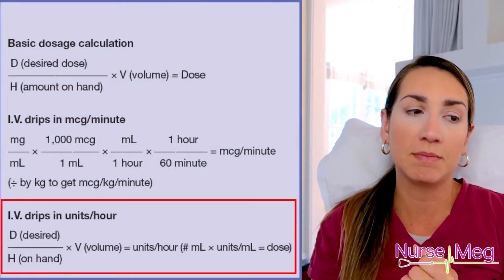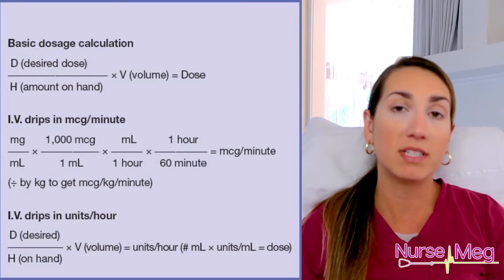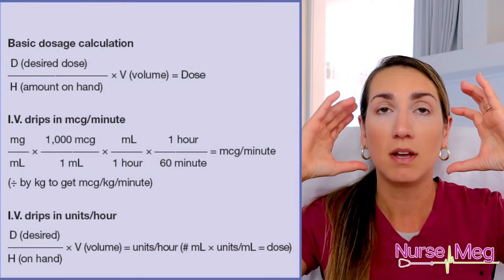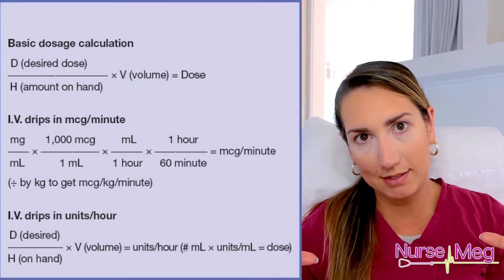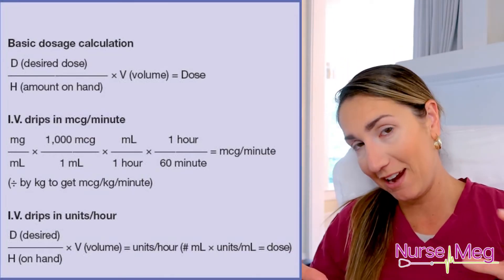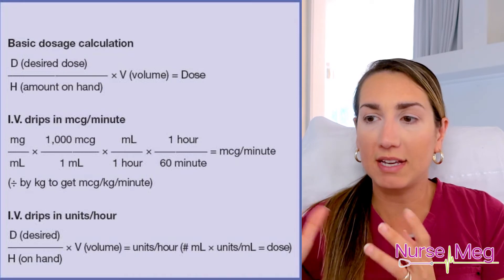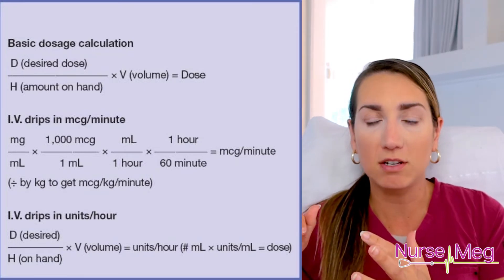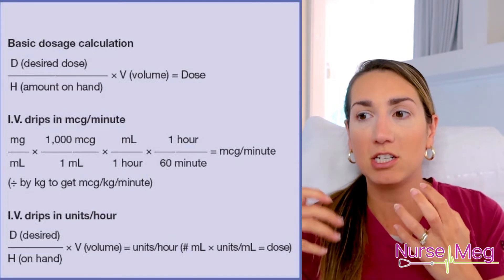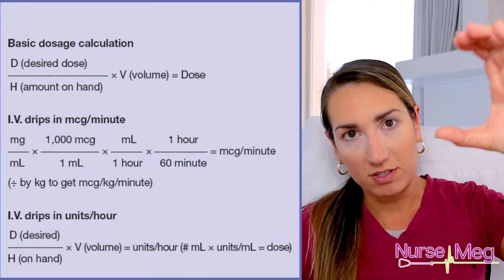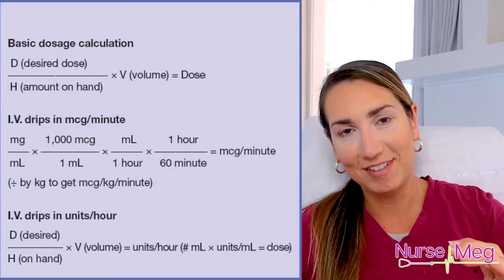IV drips sometimes are units per hour depending on the medication — the first one that comes to mind is insulin. You're always going to do the desired or prescribed dose over whatever you have on hand — whatever the Pyxis has, whatever your hospital paid for — times the volume. Always double-check the volume because it may be per hour, per minute, or per dose. Always keep in your head: desired dose over what you have on hand. Order over what the Pyxis gives you — that's how you calculate it.